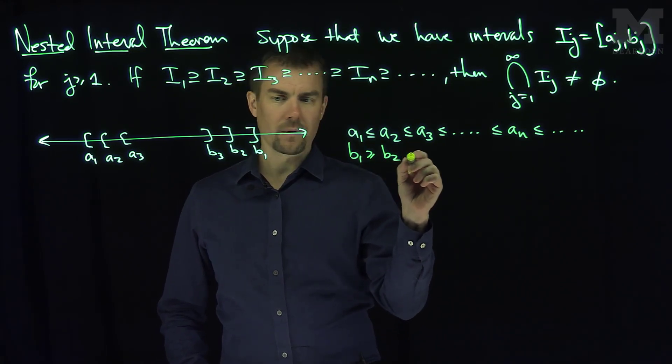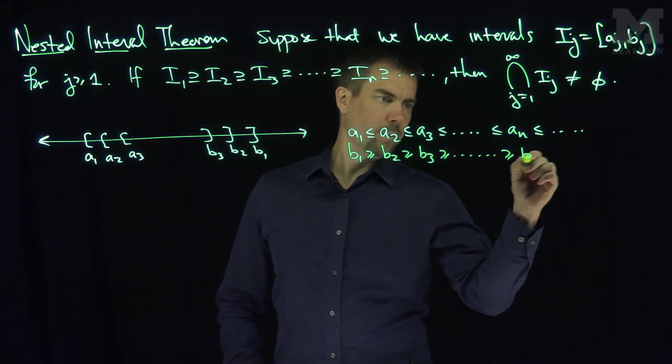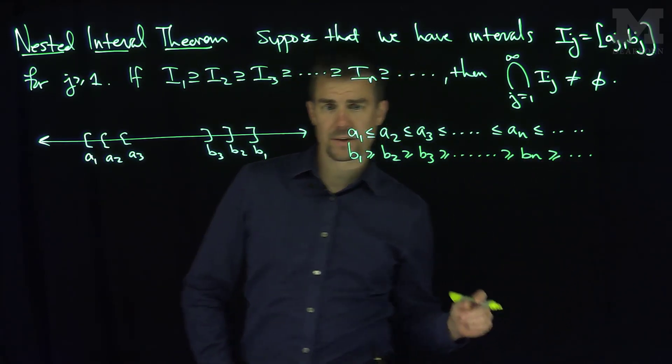and then the b's are a decreasing sequence. b1 bigger than or equal to b2, bigger than or equal to b3, bigger than or equal to bn. It's a decreasing sequence.